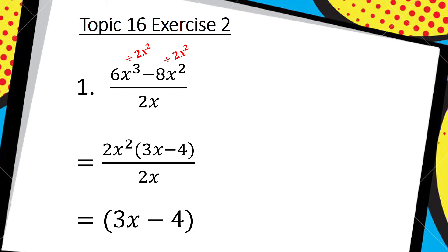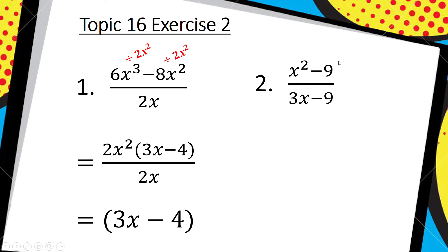Number 2 — copy it down and then we'll get started and I'm going to do it with you. Looking at the numerator of number 2, I can see there's no highest common factor. There are no x's in both terms, there are no numbers common to both terms, so we can't take out anything. So I first check for a highest common factor — which there isn't.